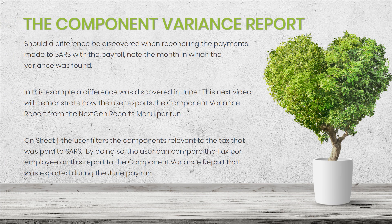Should a difference be discovered when reconciling the payments made to SARS with the payroll, note the month in which the variance was found. In this example, a difference was discovered in June. This next video will demonstrate how the user exports the component variance report from the NextGenReports menu per run.